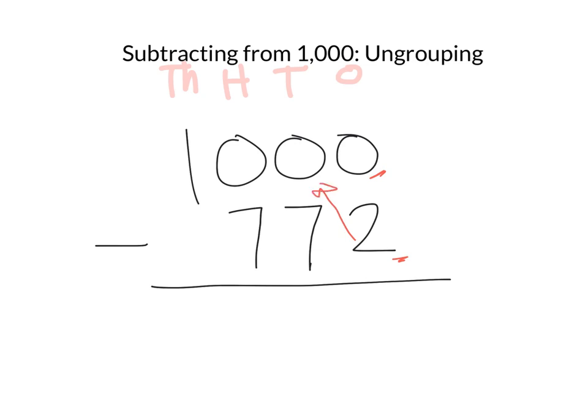Our next door neighbor has nothing to give us, so we're going to go next door, trade 10 more. Even our hundreds number has nothing to give us, so we're going to go next, next door — and we have a thousand there.